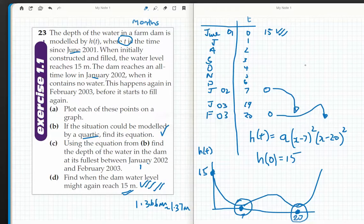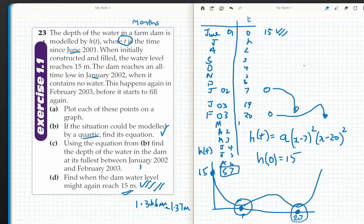I'm going to say, what does 27 mean? March will be 21, April, May, June, July, August - 2, 3, 4, 5, 6, 7 is September. So it'll be 15 again in September 2003, and that's when t equals 27.